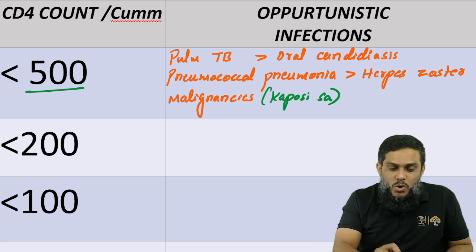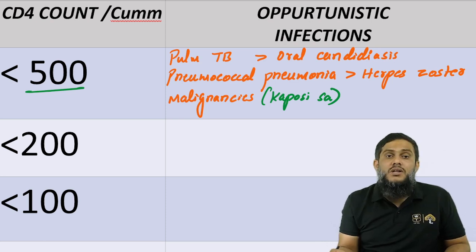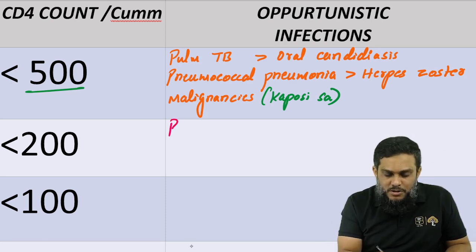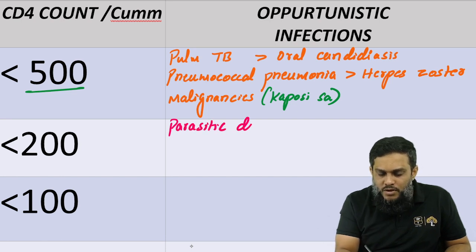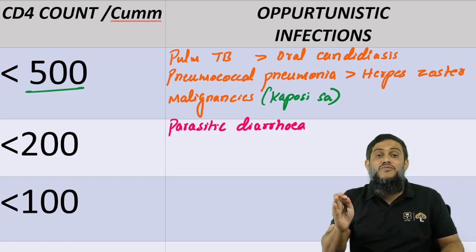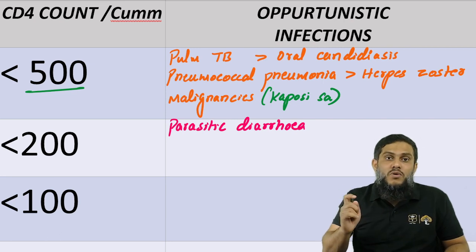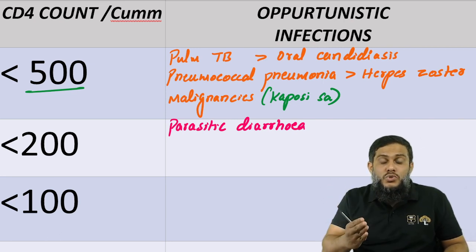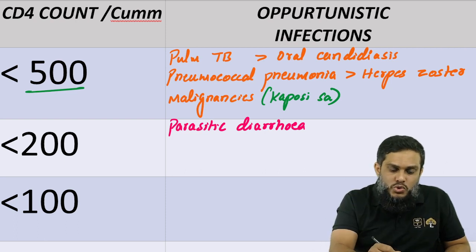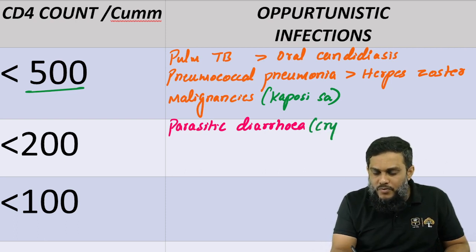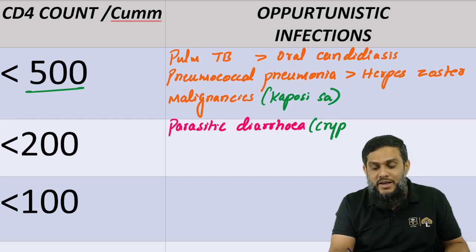When CD4 count falls below 200, the very important clinical manifestation is parasitic diarrhea. The acid-fast protozoa that cause diarrhea in HIV patients are cryptosporidium, cyclospora, and isospora. Among these three, the most common is cryptosporidium, and the diarrhea caused by cryptosporidium is called cryptosporidiosis.